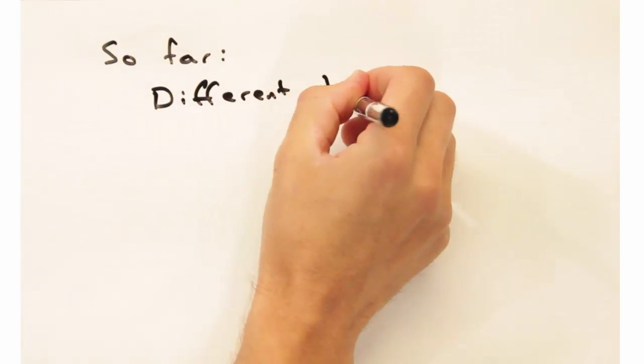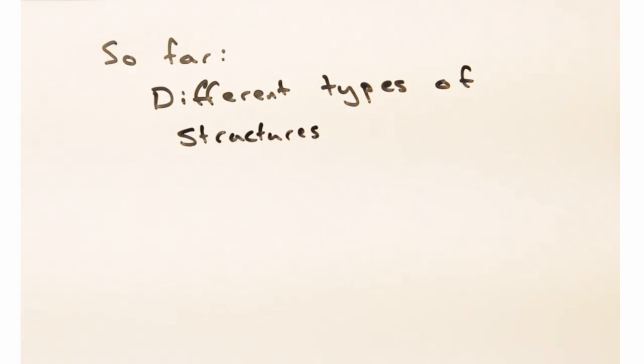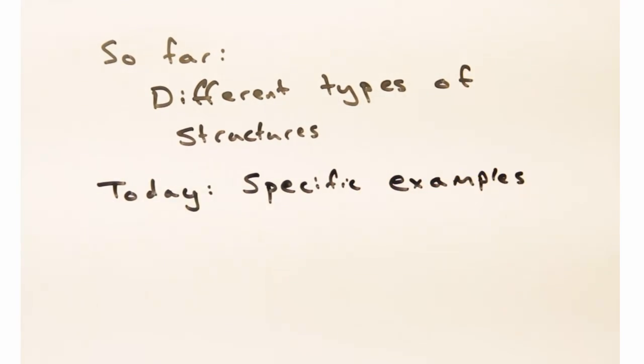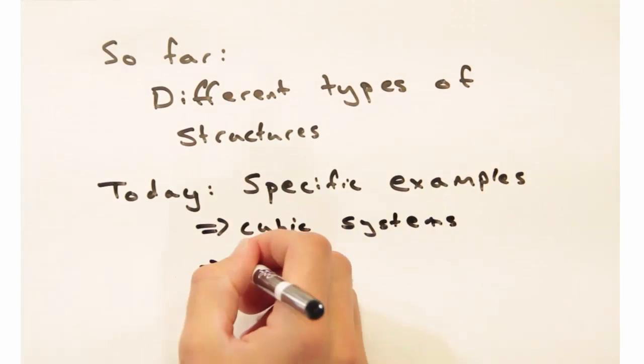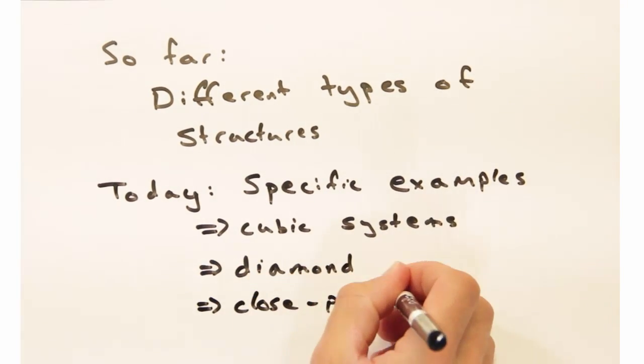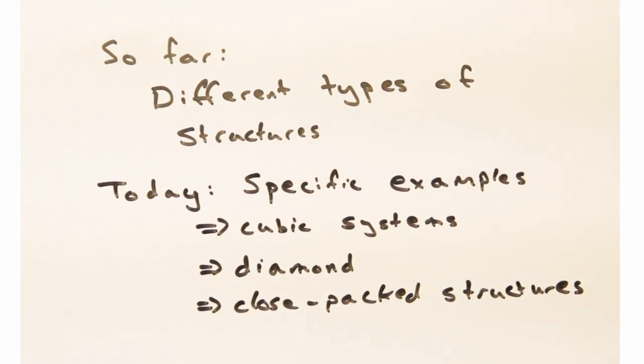So far we've talked about different types of structures, but today we want to look at specific examples that are important in solid state physics. We'll start by looking at different cubic systems, transition into diamond, and finish with a discussion on close-packed structures.